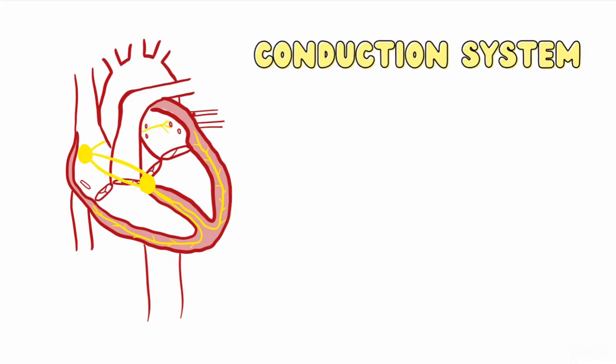In the normal heart, electrical impulses begin in the SA node, or sinoatrial node. This impulse travels through the internodal branches to the AV node. From the AV node, the signal is propagated through the bundle of Hiss, the right and left bundle branches, and the Purkinje fibers.